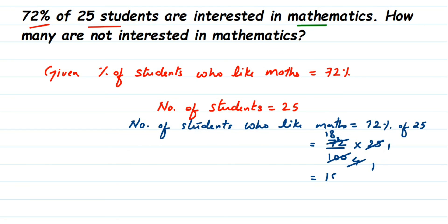So 18 students, out of 25 students, 18 students like mathematics. Then how many students don't like mathematics? You have to subtract 18 from 25. That's it.